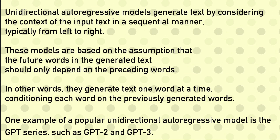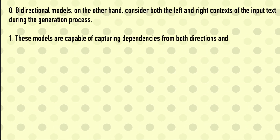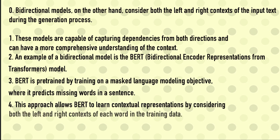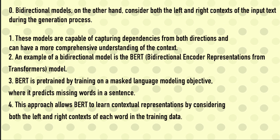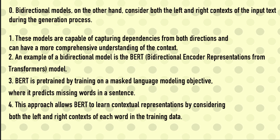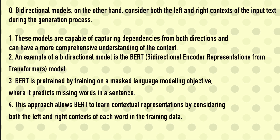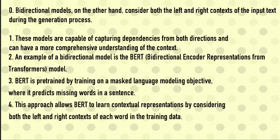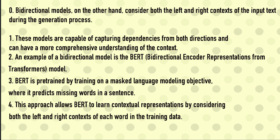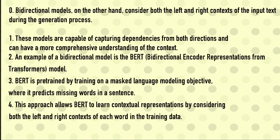There is a different architecture called a bi-directional architecture or bi-directional auto-regressive model. As you might have guessed, instead of considering only one direction, it can consider both directions. You might be wondering how is that even possible, and how does the training process happen if you have to consider both sides. That is where a model like BERT — which completely ruled the world before all these hyped LLMs — comes in. BERT stands for Bi-directional Encoder Representations from Transformers.